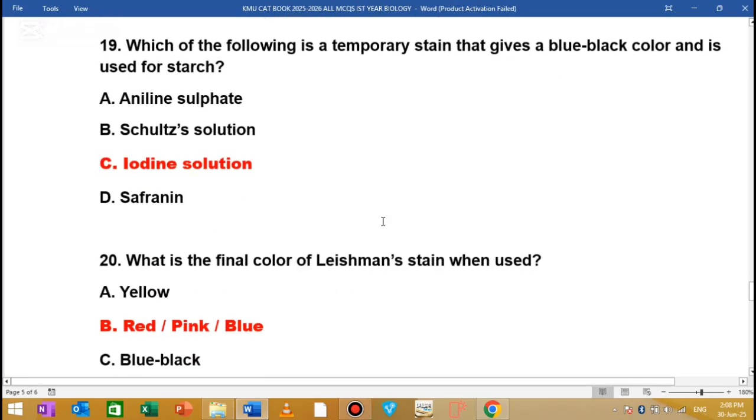Question number 19: Which of the following is a temporary stain? It gives blue or black color and is used for starch. Starch is a simple form of carbohydrate stored in plants.